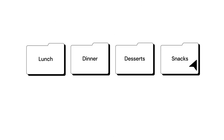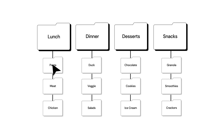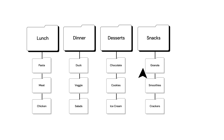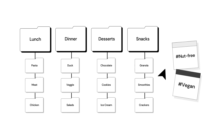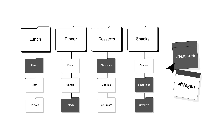Going back to our food blog analogy, we can have categories for every type of recipe, with subcategories used for the type of ingredient. And we can use tags for specific topics in our recipes, like using the tag 'vegan' for every plant-based recipe, or 'nut free' for people who have a nut allergy and are looking for safe recipes to follow.